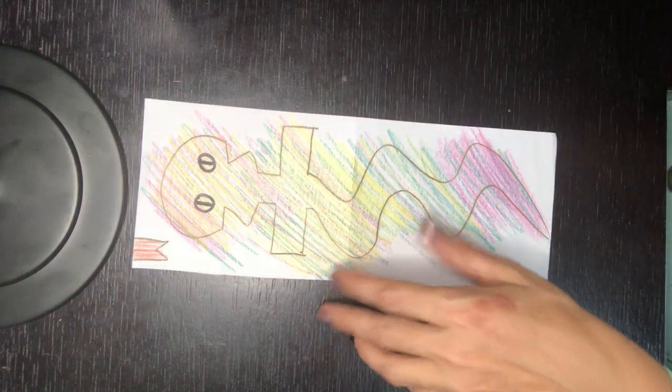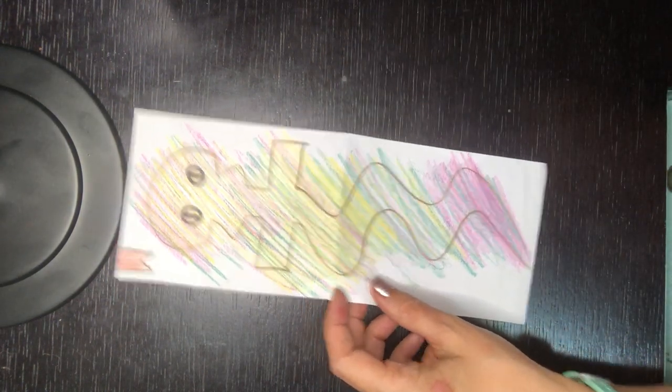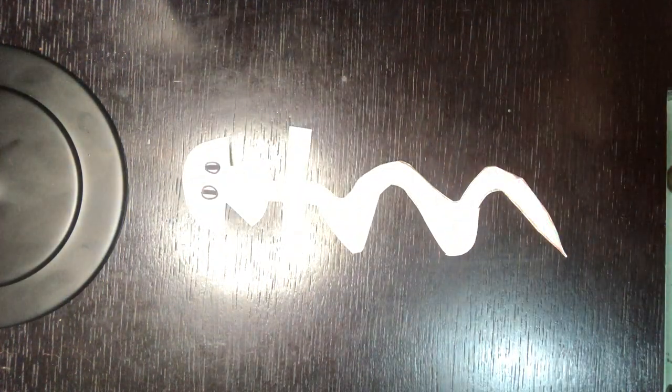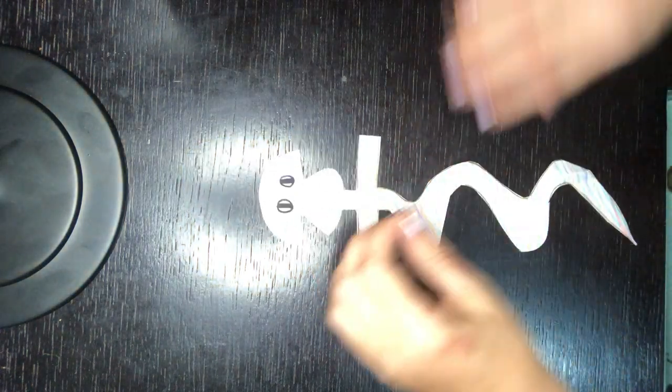So after you've cut it out, here we go we have our snake it's all cut out. We have our eyes on it and we have our little tongue. So here's our tongue.